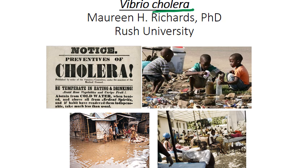Vibrio cholerae is the causative agent of the disease known as cholera. There have been seven major pandemics of cholera in human history, resulting in thousands of deaths and major socioeconomic changes. Some notable people affected include our 11th president, James K. Polk, who died of cholera during an epidemic in 1849.